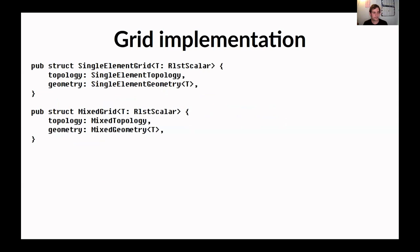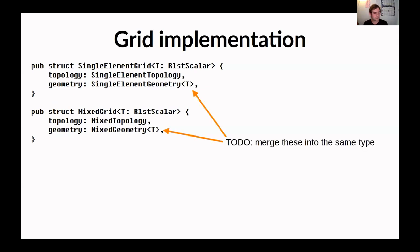Grid storage looks like this. We have two types of grid: the single-element grid, where every cell is the same type — all triangles or all quadrilaterals — and the mixed grid, where we have some triangles and some quadrilaterals, requiring an extra loop over different cell types. Since writing these slides, I realized the two geometry types are actually very similar since geometry just stores 3D points. We could use the same geometry for both, so a big to-do is merging them into the same type with different topology types but a shared geometry type.